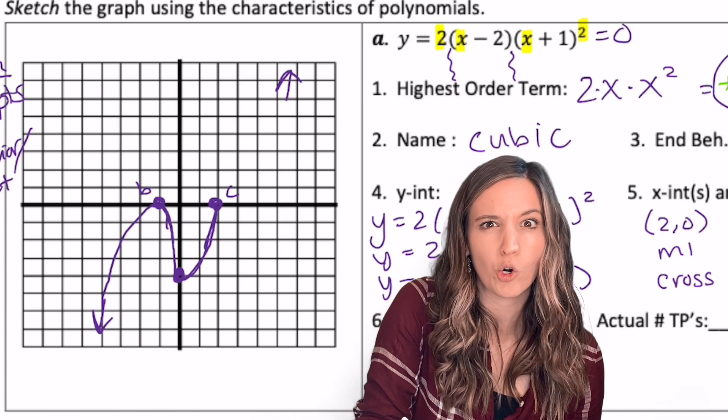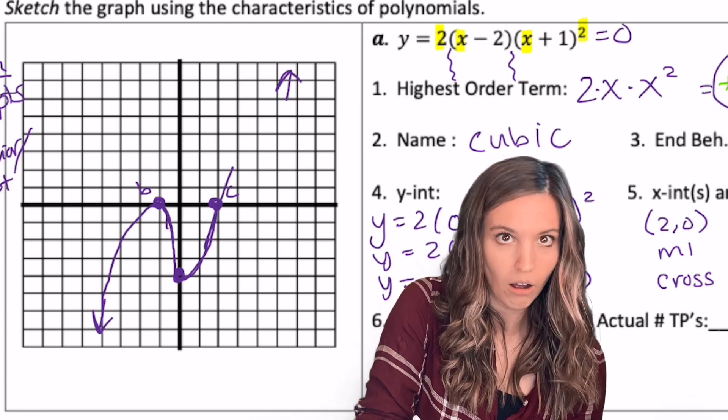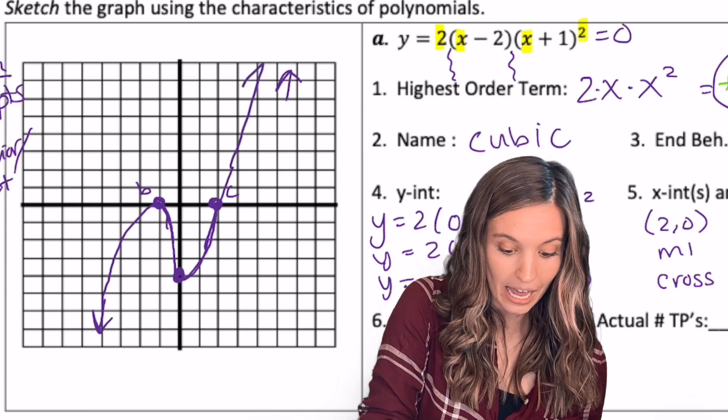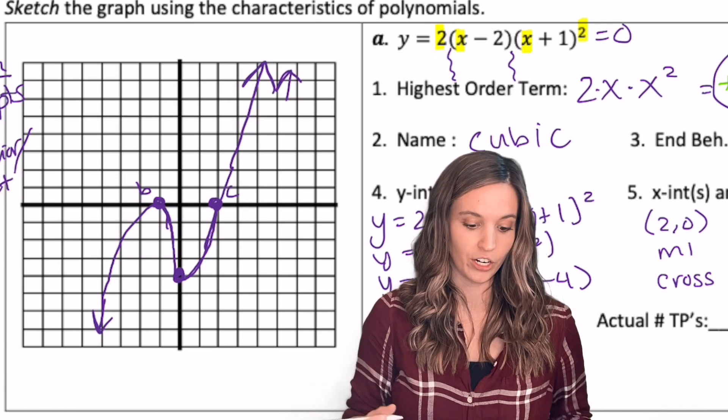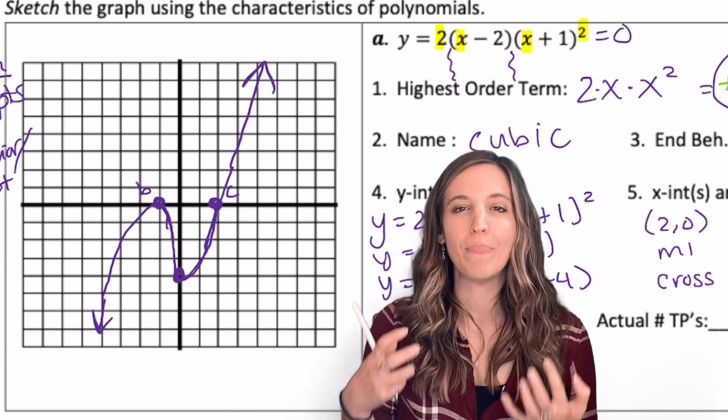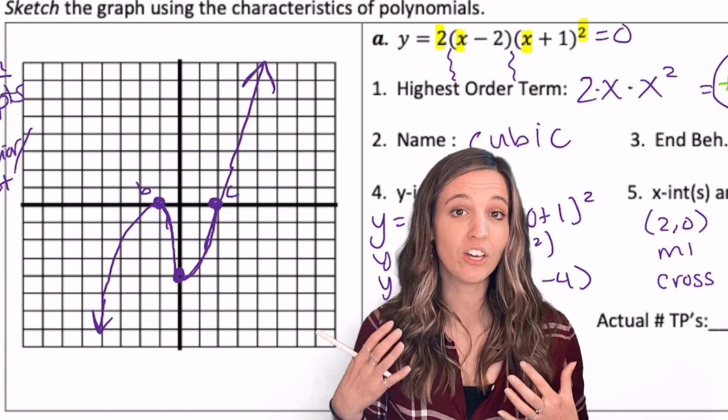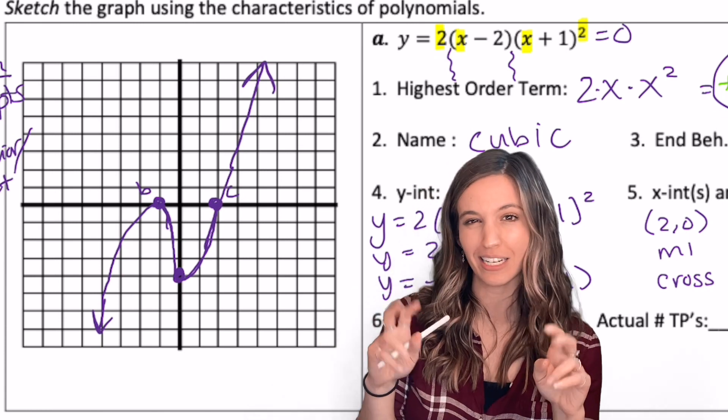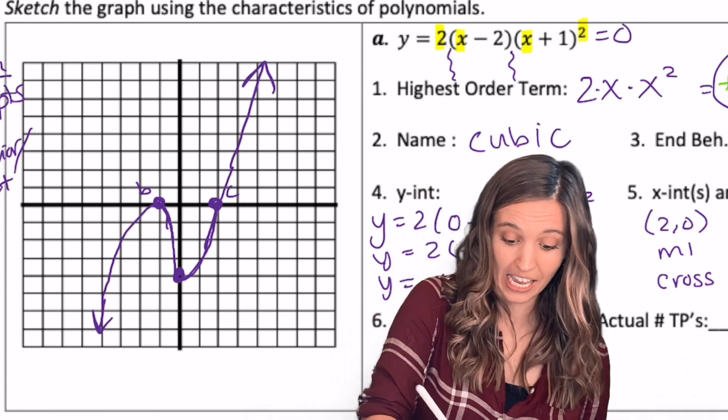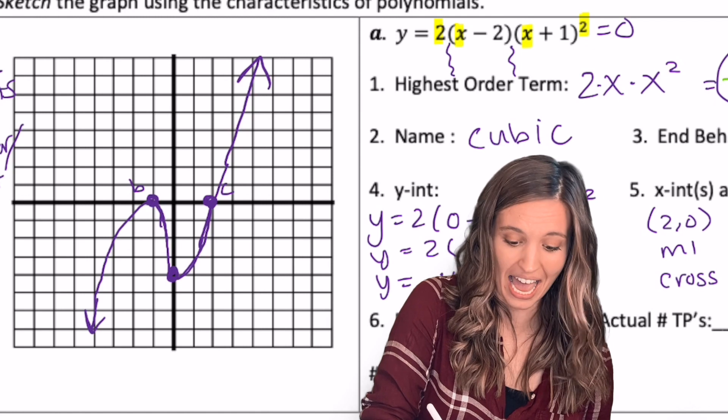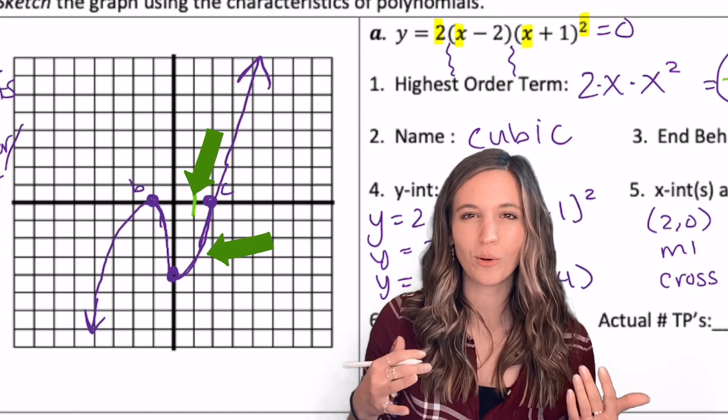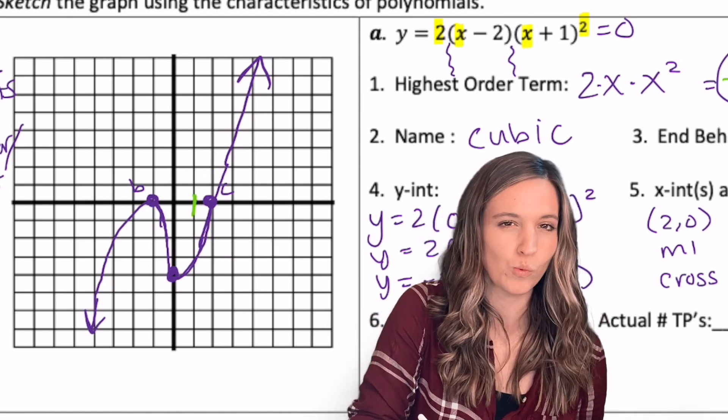There's a c. So that one's going to be a cross. So I get to cross through it. Great, because then I can head up and finish my end behavior. Now if I'm going for the best possible sketch here, what I really could do is what I like to call a reality check. I could plug in that value where I feel like I made a guess. So right here. So I wasn't sure what's going to happen right there at x equals one.